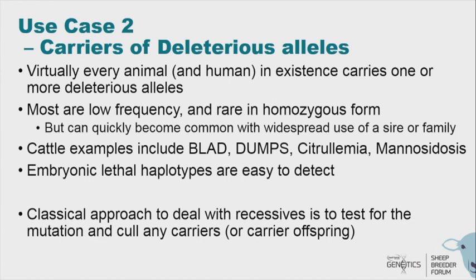The classical approach to dealing with recessives is to test for the mutation and get rid of carriers — but that grossly reduces selection intensity. It's far better to continue using elite individuals even if they carry an unfavorable mutation, test the offspring, and make sure only clear males are used widely in the next generation. There's growing interest in the dairy industry in genotyping every cow so that when choosing a mating, you can avoid pairing a cow and bull that both carry the same recessive mutation.